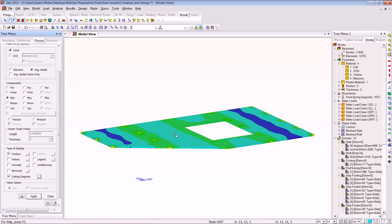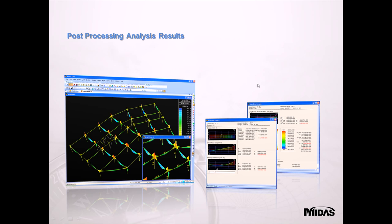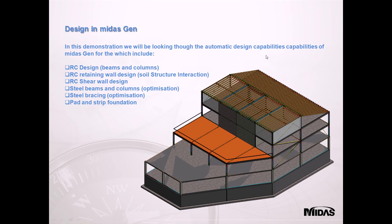I'm going to take you back into the presentation to look at some of the design aspects. Now I'm going to show you how to automatically design some of the elements: the reinforced concrete column, the steel design with brief optimization, the slab design, and also the wall design. Bear with me while I go straight back into the program.